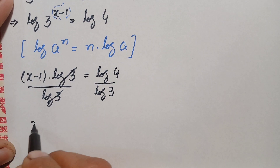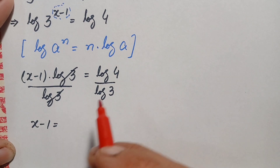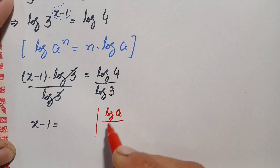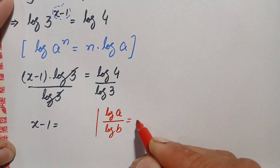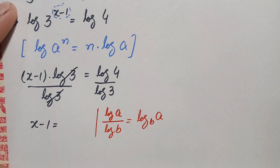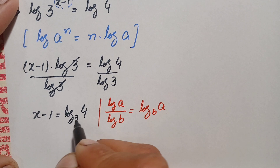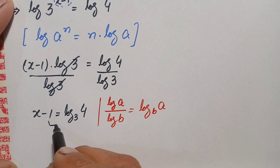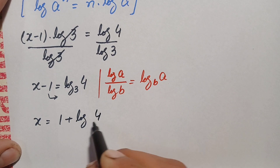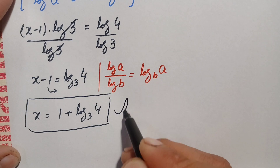After dividing, x minus 1 remains on the left side. On the right hand side we apply the change of base identity: log of a divided by log of b equals log of a with base b. So the right hand side becomes log of 4 with base 3. Moving negative 1 to the right hand side makes it positive 1, giving us x is equal to 1 plus log of 4 with base 3. So finally, x equals 1 plus log₃(4) is our answer.